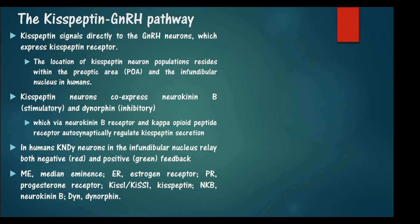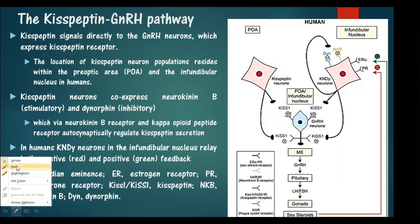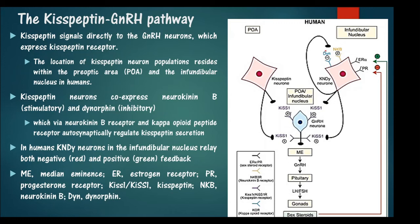Next is the kisspeptin–GnRH pathway. Kisspeptin signals directly to the GnRH neurons, which express the kisspeptin receptor. The location of kisspeptin neuron populations resides within the preoptic area inside the hypothalamus. The kisspeptin neurons can co-express neurokinin B, which is stimulatory, and dynorphin, which is inhibitory.